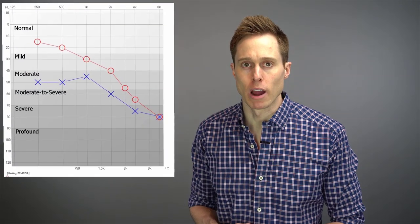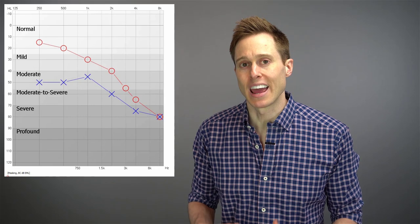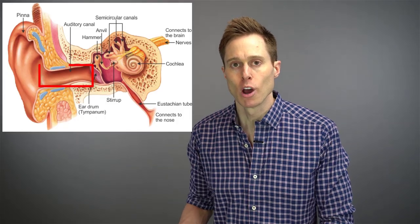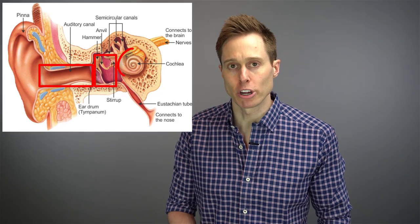First, let's discuss air conduction testing on the graph portion of your audiogram. These X's and O's represent air conduction testing, which is basically the pathway of sound from your outer ear through your middle ear into your inner ear, which is your cochlea.